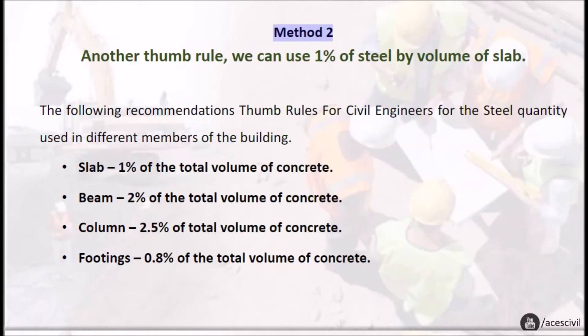Method two: another thumb rule we can use one percent of steel by volume of slab. The following recommendations are thumb rules for civil engineers for the steel quantity used in different members of the building. Slab: slab one percent of the total volume of concrete.